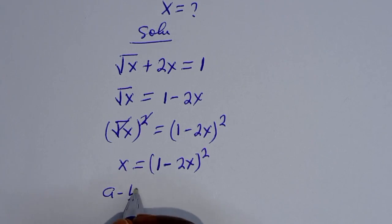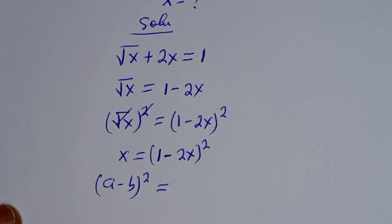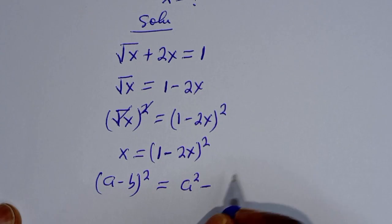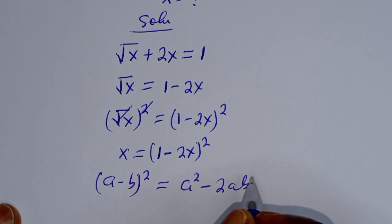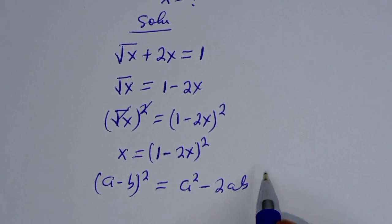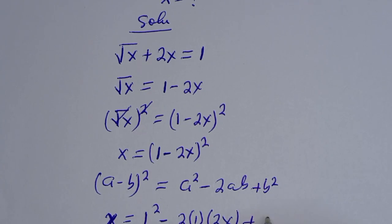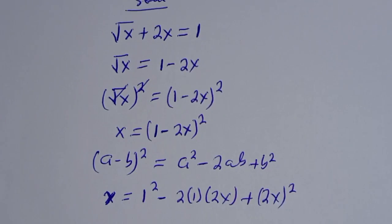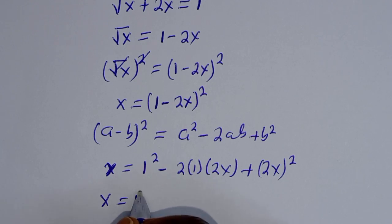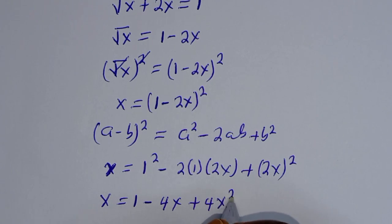Note that if you have (a minus b) squared, this is equal to a squared minus 2ab plus b squared. So, s is equal to 1 squared minus 2 multiplied by 1 multiplied by 2s plus (2s) squared. Then, s is equal to 1 minus 4s plus 4s squared.